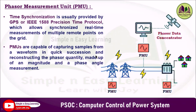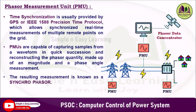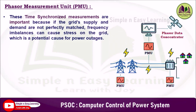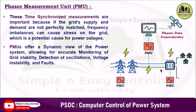Phasor measurement units are capable of capturing samples from a waveform in quick succession and reconstructing the phasor quantity, made up of a magnitude and a phase angle measurement. They take nearly 120 samples per second, and the resulting measurement is known as a synchrophasor. These time-synchronized measurements are important because if the grid supply and demand are not perfectly matched, frequency imbalances can cause stress on the grid, potentially causing power outages.